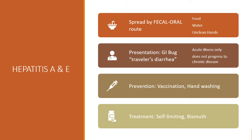Hepatitis A and E are very similar in transmission and presentation. They are spread by the fecal-oral route, which means fecal contamination gets into the mouth somehow. This can be from not washing your hands after going to the bathroom and handling food, from a contaminated water supply, or from any activities where the mouth touches the anus. The presentation is the typical GI bug, or what we refer to as Montezuma's revenge or traveler's diarrhea, because these are frequently seen in countries outside of the United States.